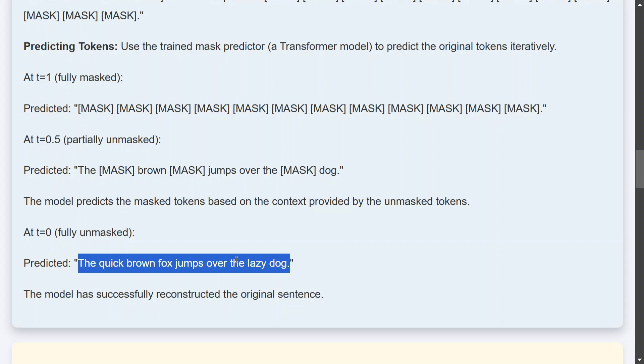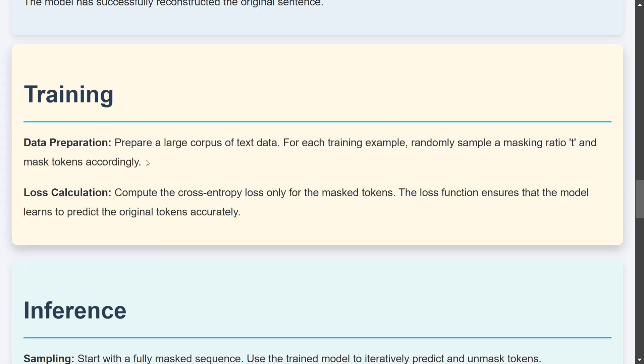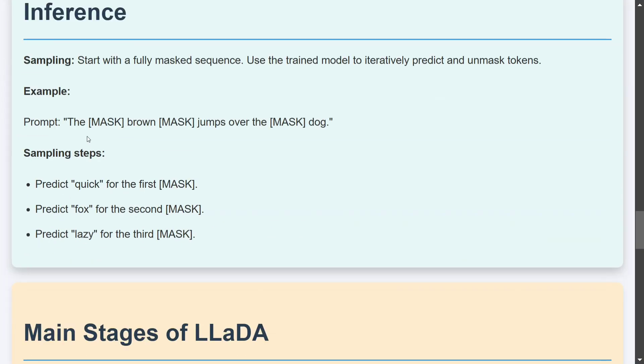Talking about the training, it's very similar to how image models are trained. Prepare large corpus of text, then randomly sample a masking ratio t and mask tokens accordingly. So set up a ratio, masking ratio. If it's 0.5, that means half of the tokens would be masked in that sentence, and then use cross entropy for loss calculation.